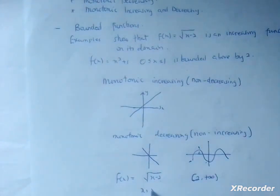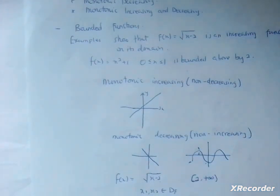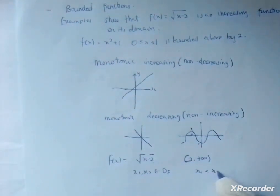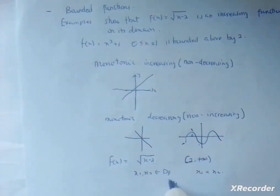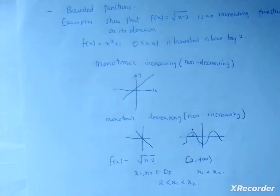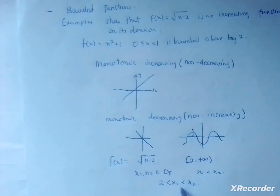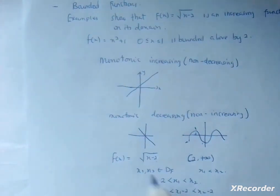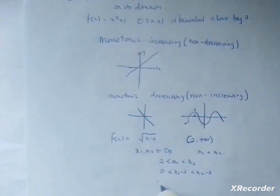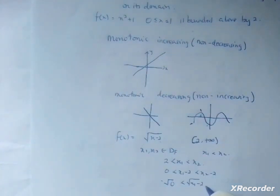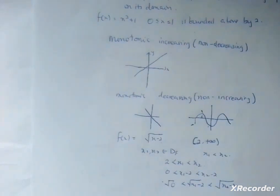Let x₁ and x₂ be members of the domain, and assume x₁ < x₂. Therefore 2 ≤ x₁ < x₂. Subtracting 2 from each part gives 0 ≤ x₁ − 2 < x₂ − 2. Taking the square root of each part gives √0 ≤ √(x₁ − 2) < √(x₂ − 2).